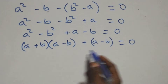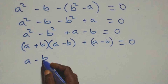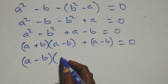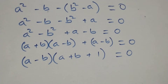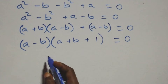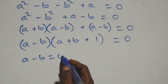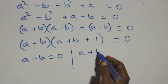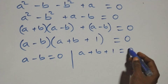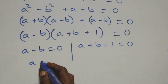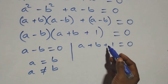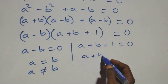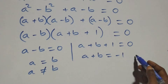Since (a minus b) is common, we factor it out: (a minus b)(a plus b plus 1) equals 0. This gives two possible cases: a minus b equals 0, giving a equals b; or a plus b plus 1 equals 0, giving a plus b equals minus 1. We label this as equation 3.